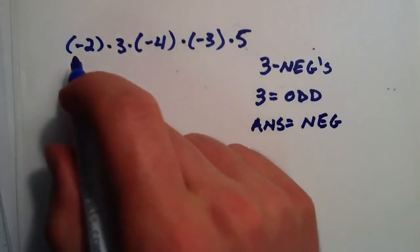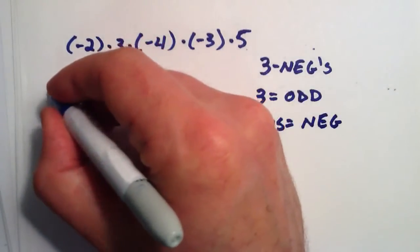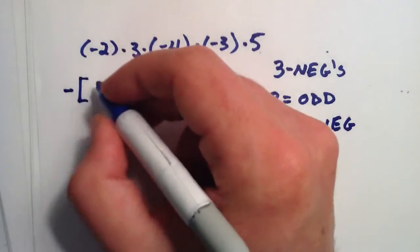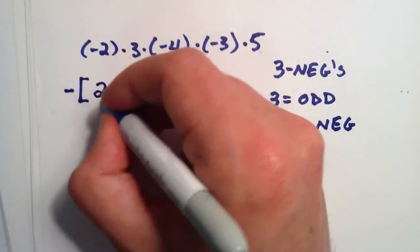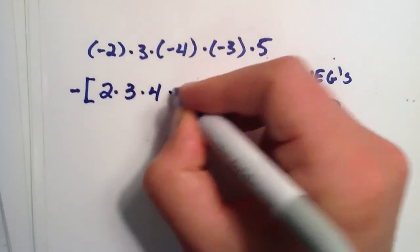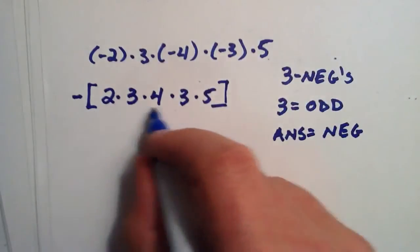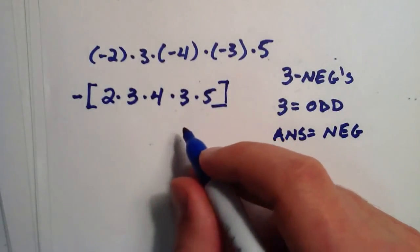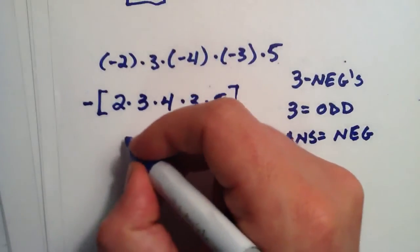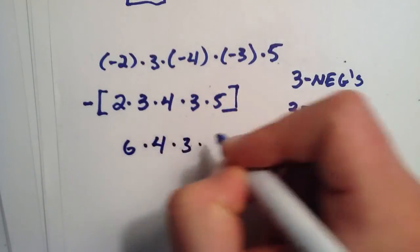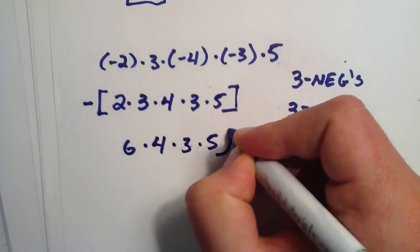Now we just treat these as if they were all positives, but we put that negative on the left-hand side here just to remember that our answer will be negative. Now we just treat these all as positive multiplication. 2 times 3 is 6, and that gets multiplied by 4, by 3, by 5, and then our answer will be negative.